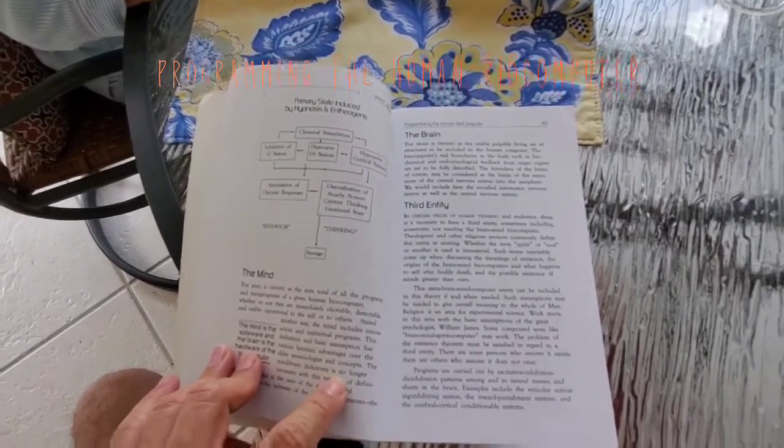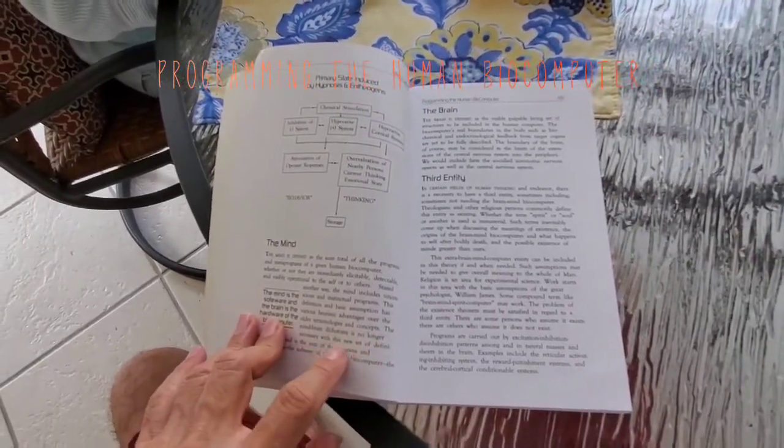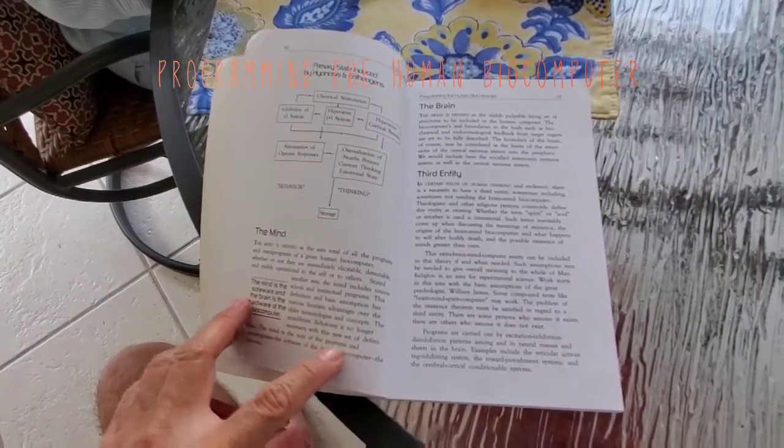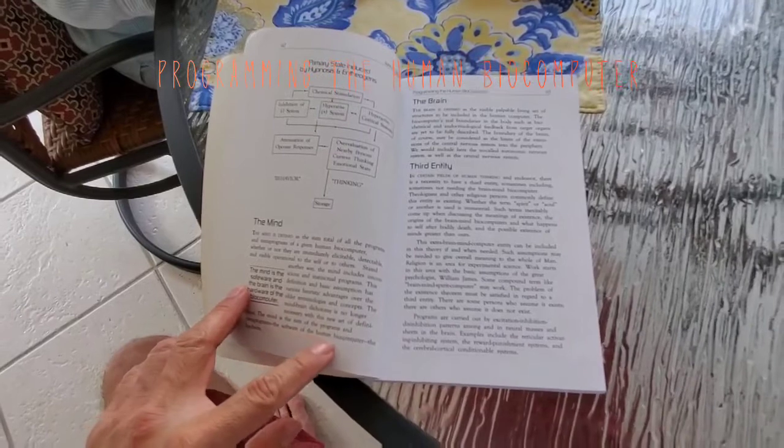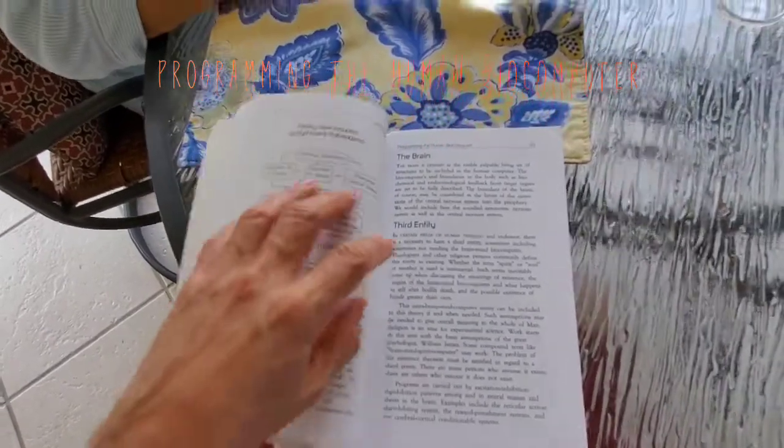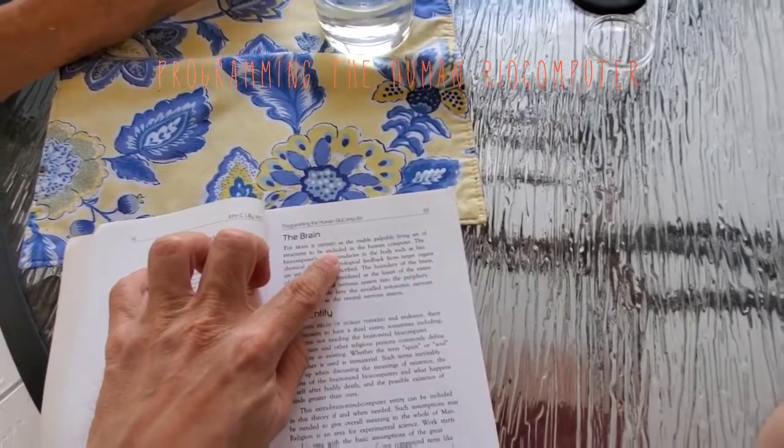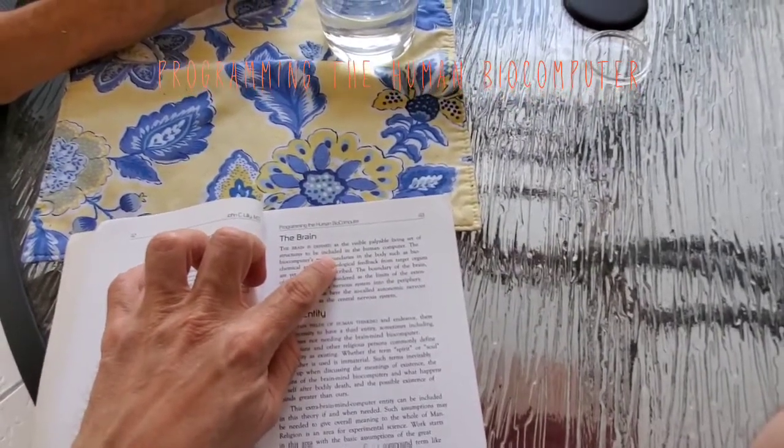The mind-brain dichotomy is no longer necessary with this new set of definitions. The mind is the sum of the programs and metaprograms, the software, the human biocomputer, the hardware. The brain is defined as the visible palpable living set of structures to be included in the human computer.